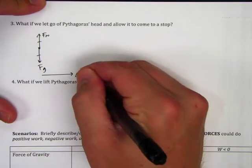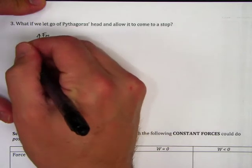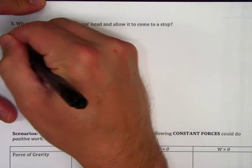So because Pythagoras is already moving to the right from our previous scenario, his displacement is going to continue. He's going to continue to slide to the right, but